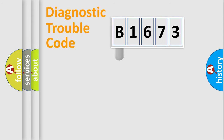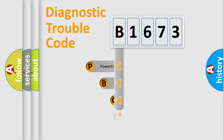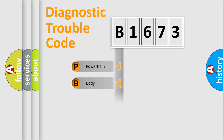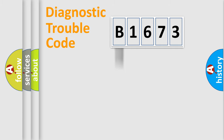Let's look at the history of diagnostic fault code composition according to the OBD2 protocol, which is unified for all automakers since 2000. We divide the electric system of an automobile into four basic units: Powertrain, Body, Chassis, and Network.